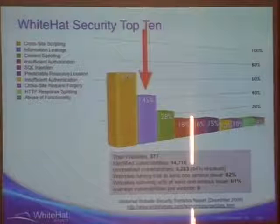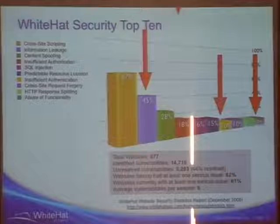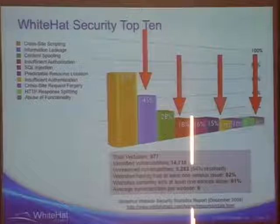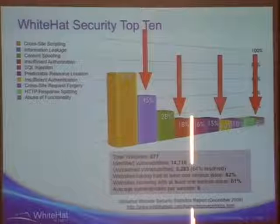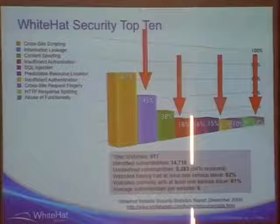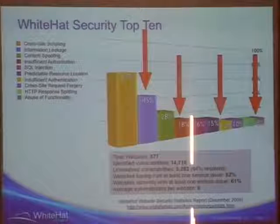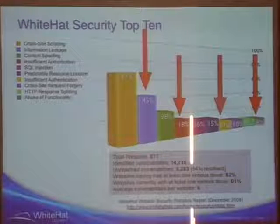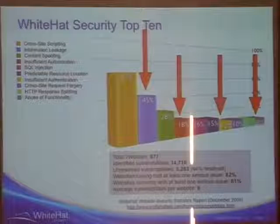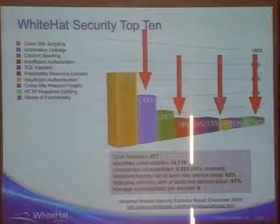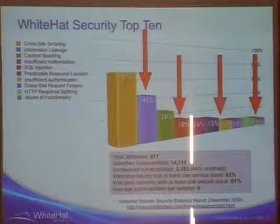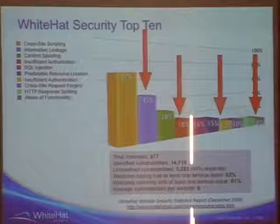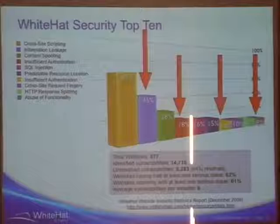This is WhiteHat's top 10. 67% of sites we look at have cross-site scripting, 45% have information leakage, and so on. Cross-site scripting, SQL injection, and cross-site request forgery we can find with a purely automated approach fairly reliably. The hidden ones — things like insecure direct object references that just require rotating a number at a URL to jump into somebody else's account — are what vendors don't like talking about because they can't automate finding them. Those are the ones we're going to focus on because they're easy to exploit and make a lot of money.